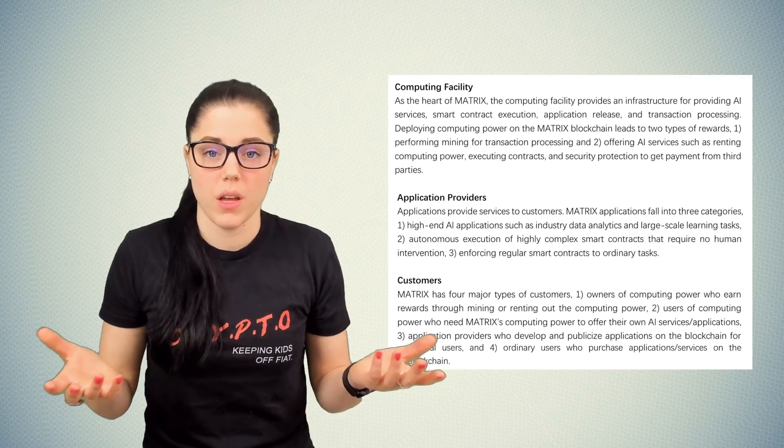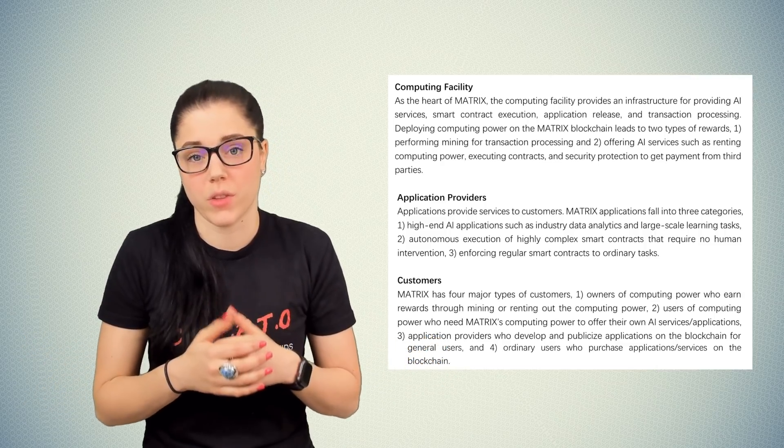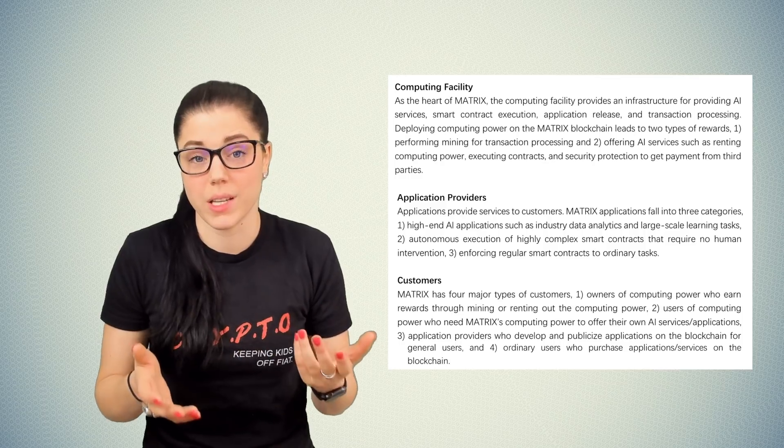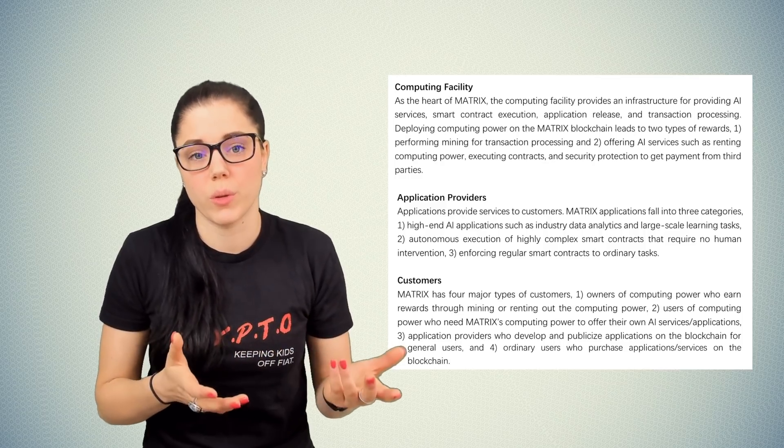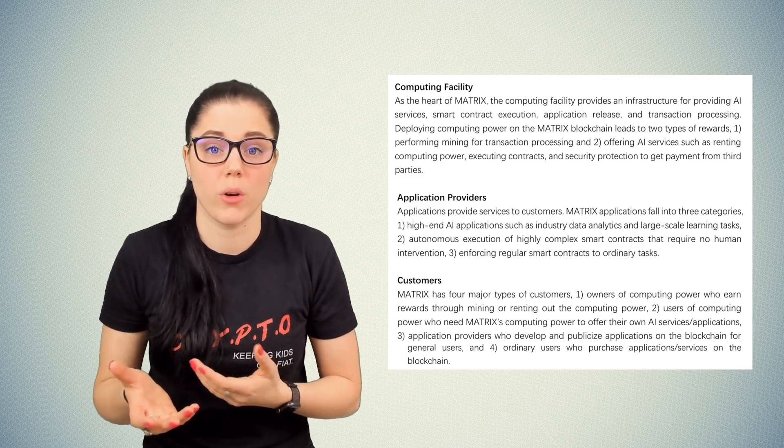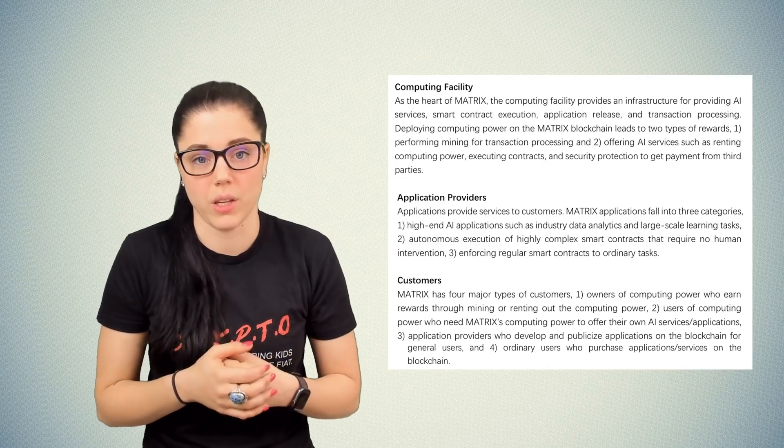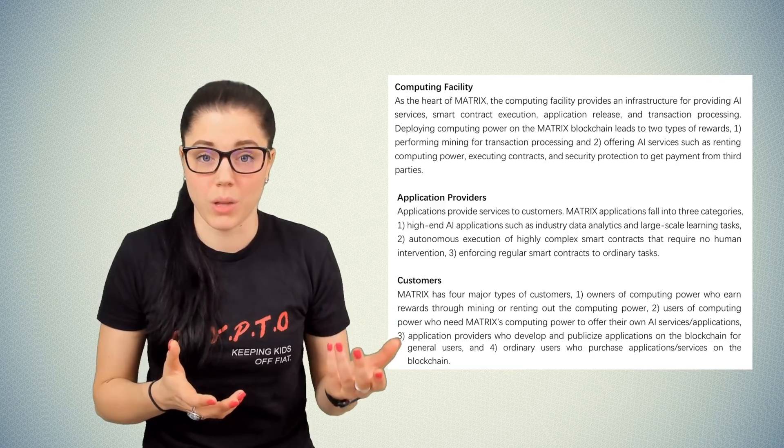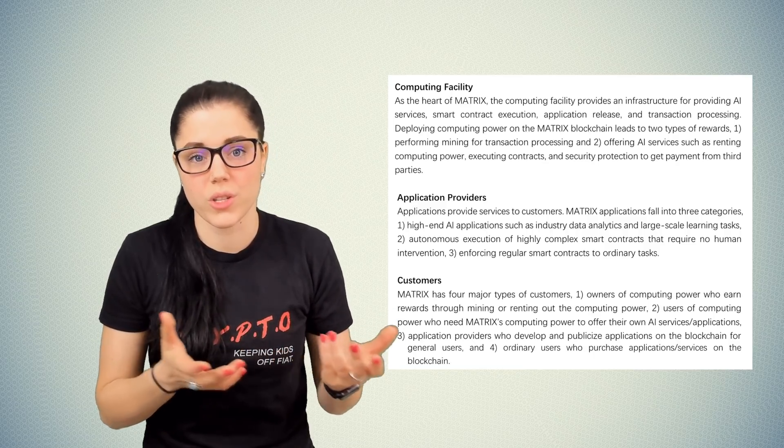And lastly, customers. Matrix states it has four major types of customers: owners of computing power who can earn rewards through mining and renting out computer power, users of computing power who need to use Matrix computing power to offer their own AI services and applications, application providers who develop and publicize applications on the blockchain for general users, and ordinary users who purchase applications and services on the blockchain.